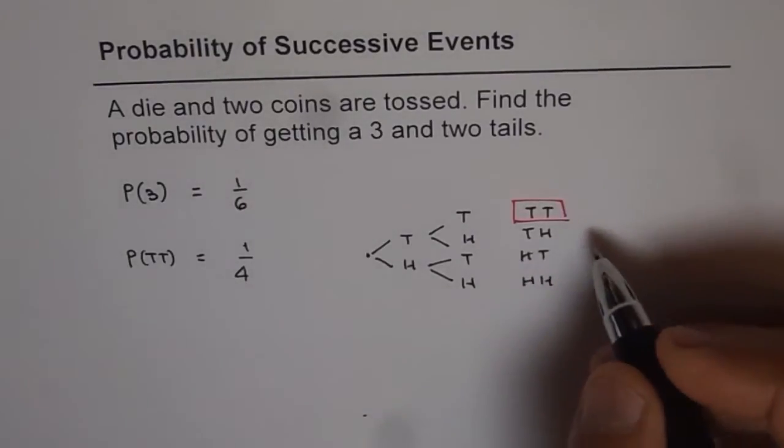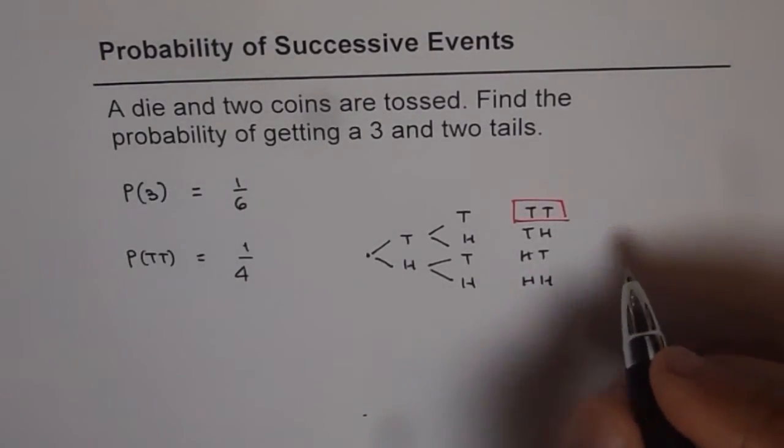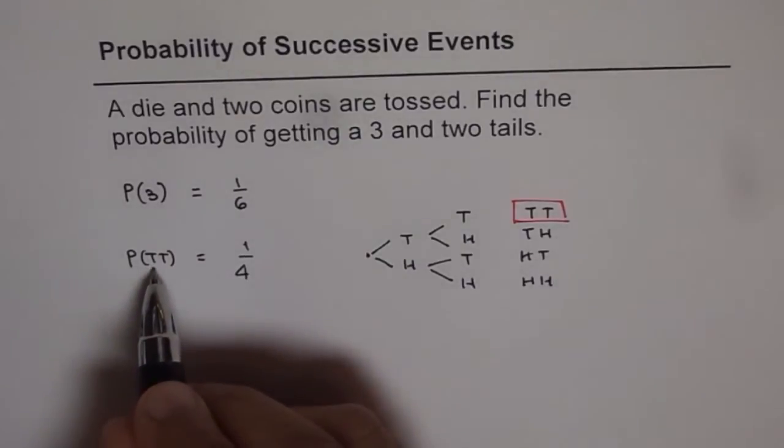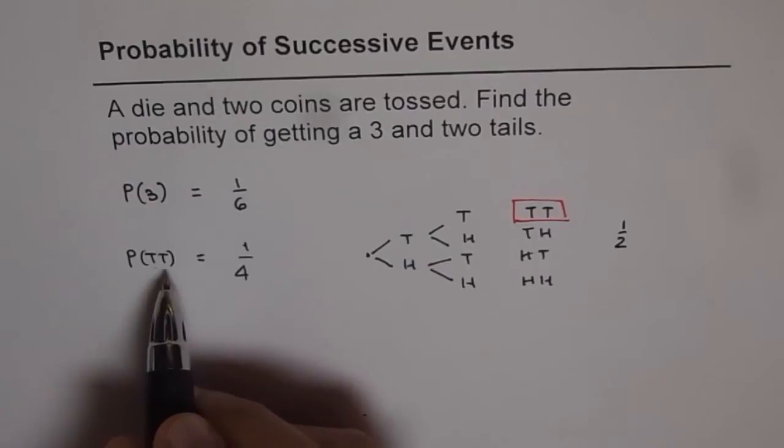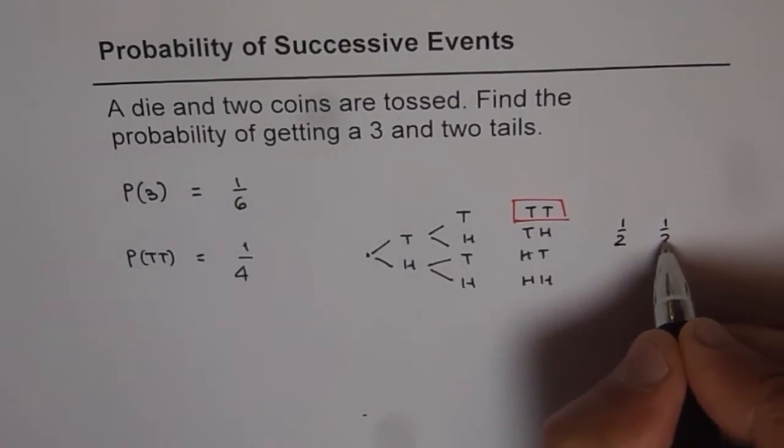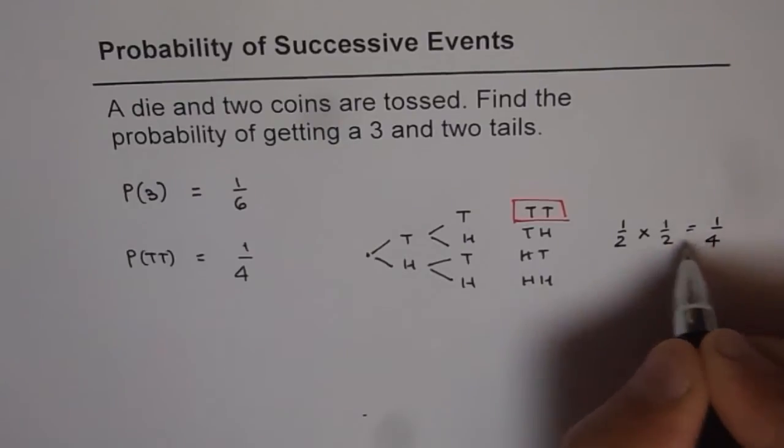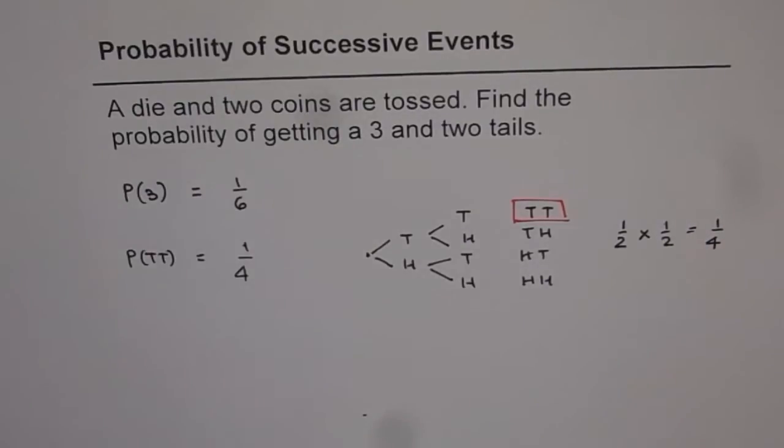The other way is when you toss a coin, the possibility of getting first tail is half. What is the possibility of getting tail again? Again half. For successive events you can multiply them and you get 1/4. So that is how we get it.